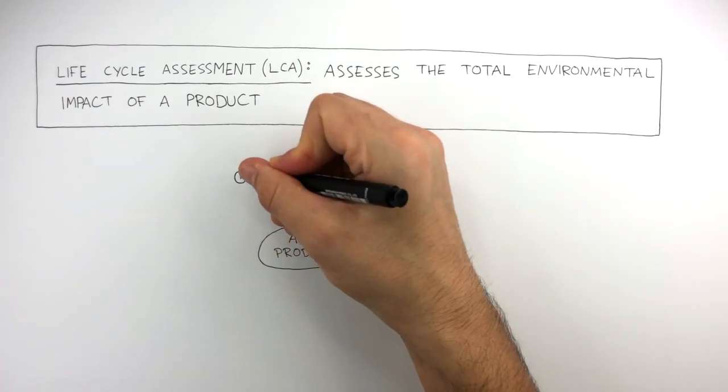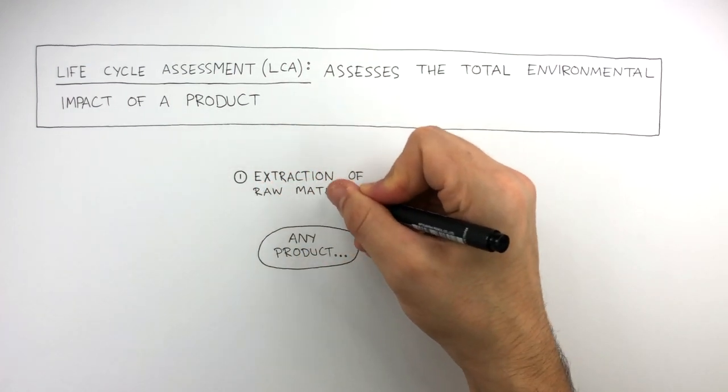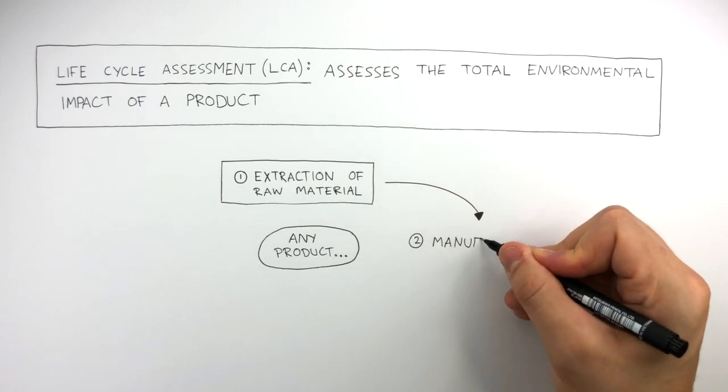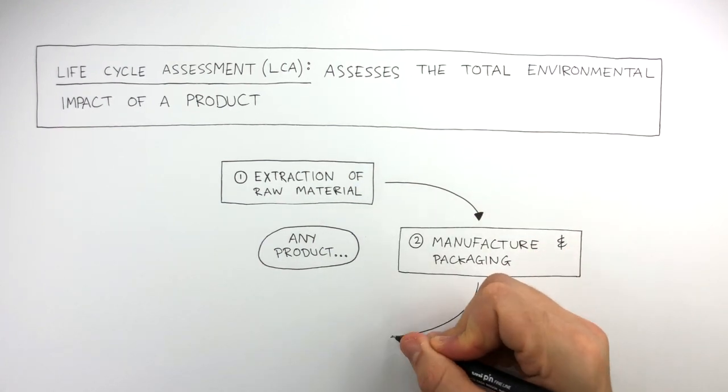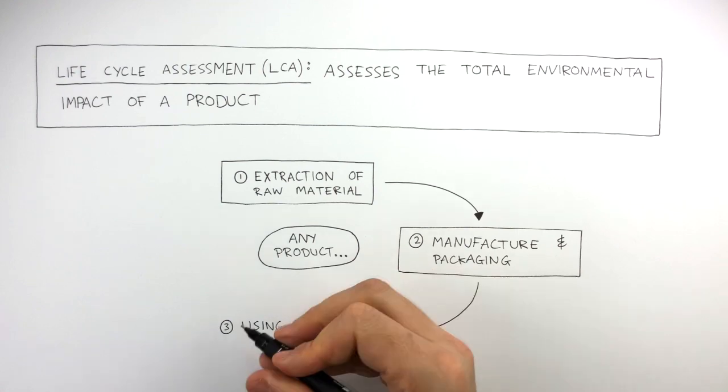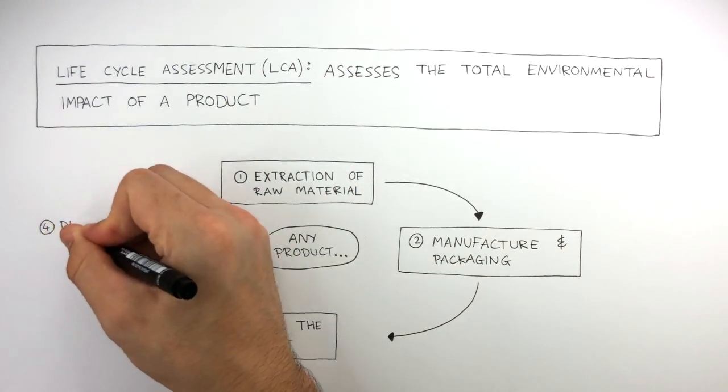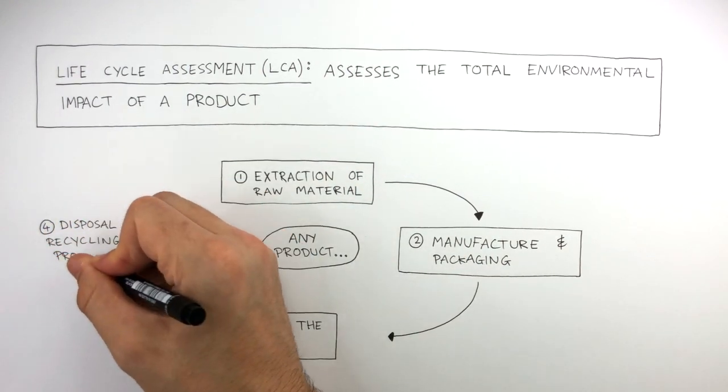It starts with 1. Extraction of raw material, 2. Manufacture and packaging, 3. Using the product and 4. Disposal and or recycling of the product.